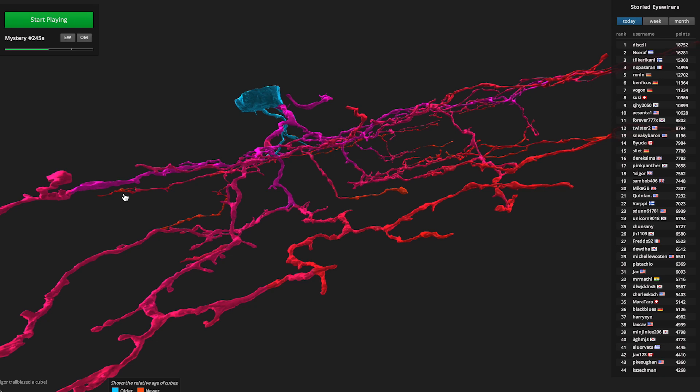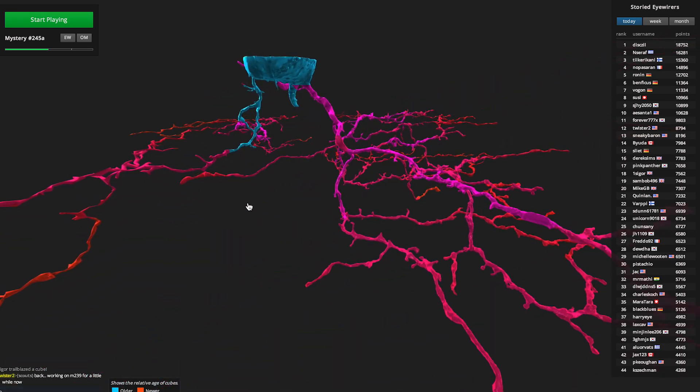And there are techniques where you use lots of people, thousands of people to work on data like this. iWire is an example. Still, you would require millions, maybe hundreds of millions of people to make progress on a big brain.